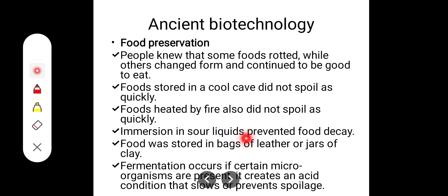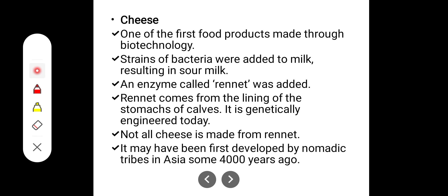People used these techniques intentionally or unintentionally, knowingly or unknowingly. Immersion in sour liquids prevented food decay — like tamarind, mango, tomato — and sour liquids such as vinegar, which we use today, were used. Food was also stored in bags and leather in previous times.